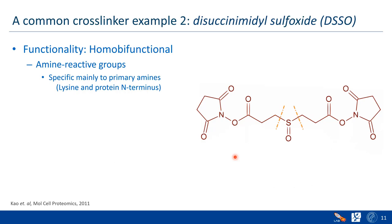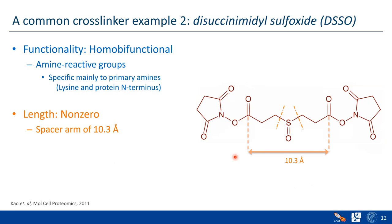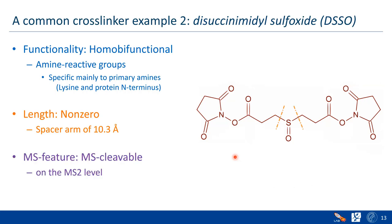The second example is DSSO. This is also homo-bifunctional, similar to before — two reactive groups targeting the same residues, specifically lysine and primary protein N-termini. It is non-zero because it has a carbon chain, though shorter than DSS. What makes this cross-linker cleavable is a labile bond next to the sulfoxide group. Because of this chemical structure, it is cut at the MS2 level.